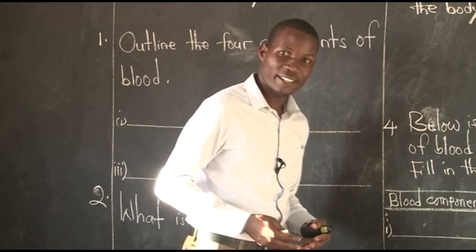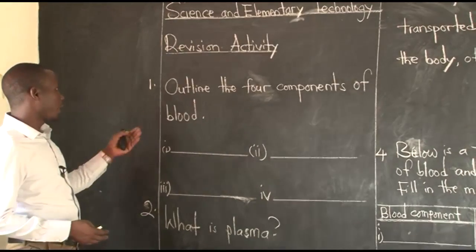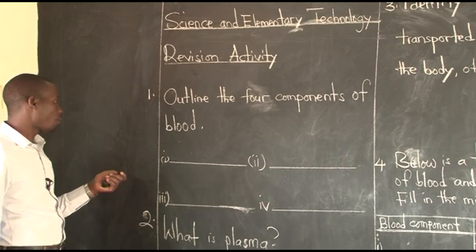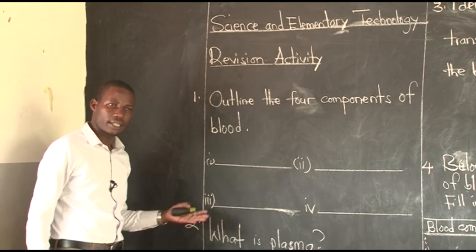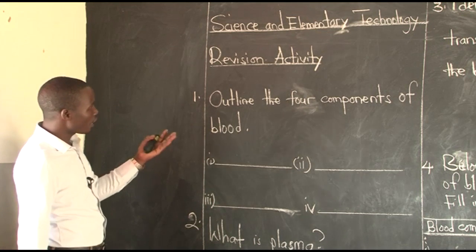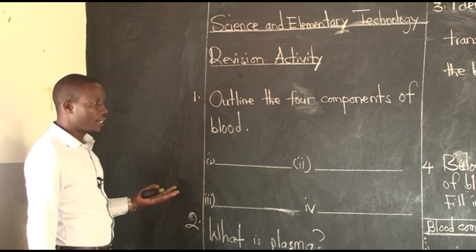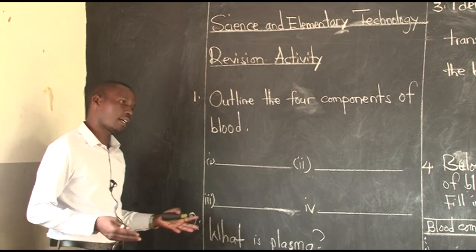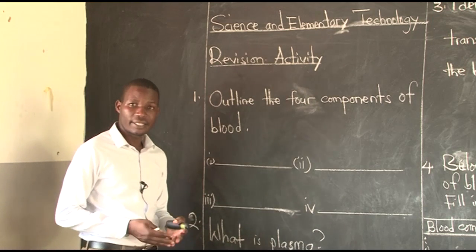So let us look at today's work. This activity, which is our kind of revision work — we are given number one. It says: outline the four components of blood. We've been looking at this right from the first day we looked at this topic of blood circulation. Now we are asked to just outline the four components of blood — the parts that make up blood. We had talked of the white blood cells, red blood cells, plasma, and platelets. These are all blood components.